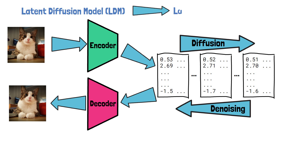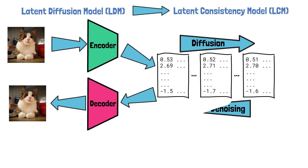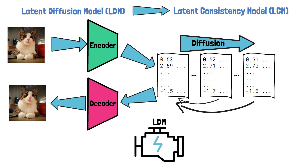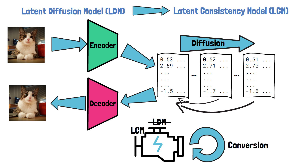But similar to diffusion models, we have a generation process with many iterations. In order to optimize the generation process, Latent Consistency Models, or LCMs, were introduced. Latent consistency models, similarly to consistency models, learn to directly remove all of the noise in order to skip steps in the denoising process. Unlike consistency models — which were new trained models with different weights from the diffusion model — latent consistency models are created by converting a pre-trained latent diffusion model's weights into a latent consistency model.